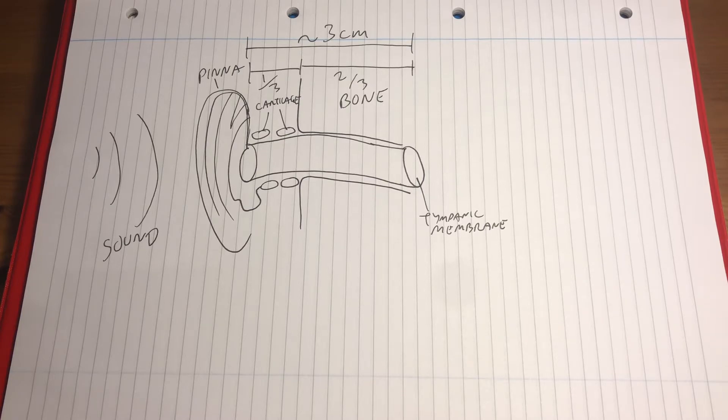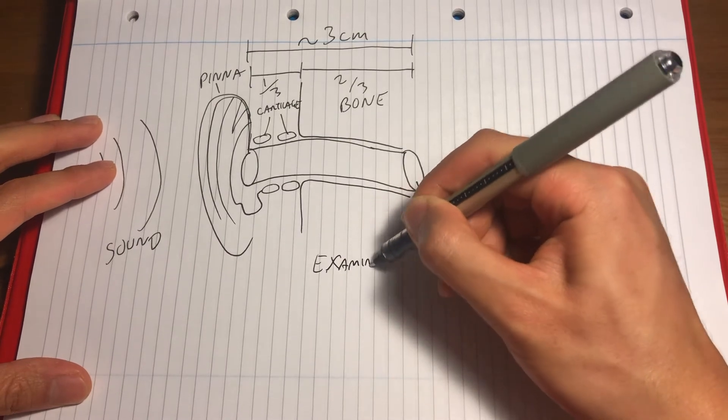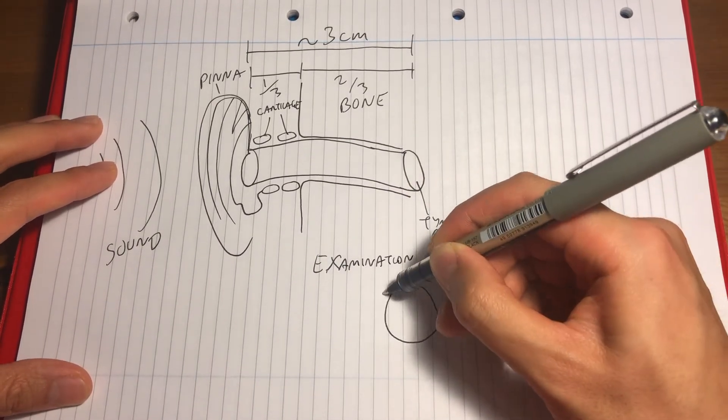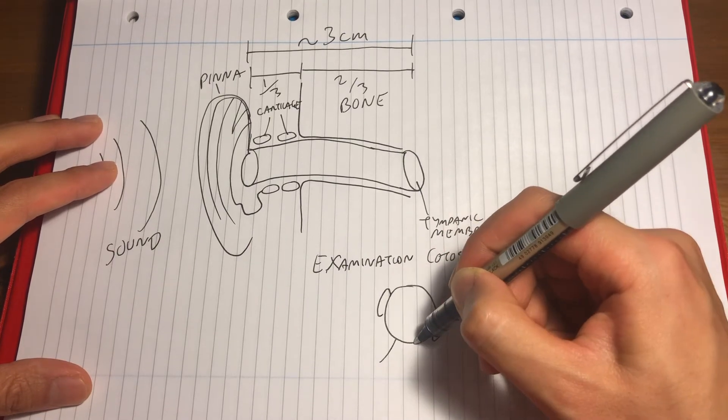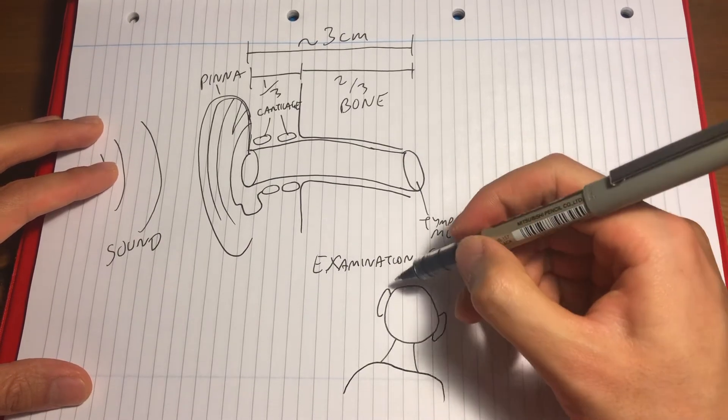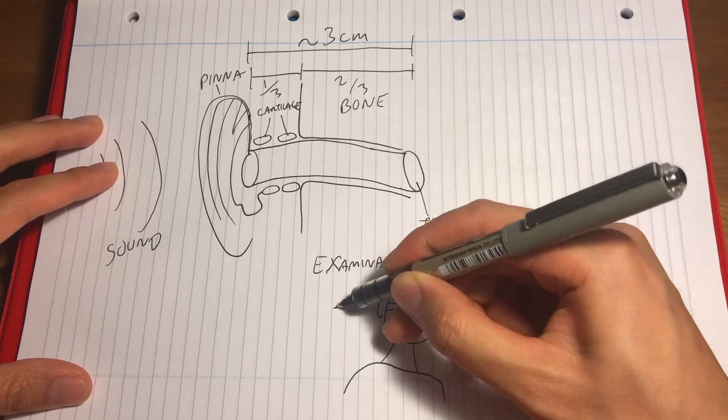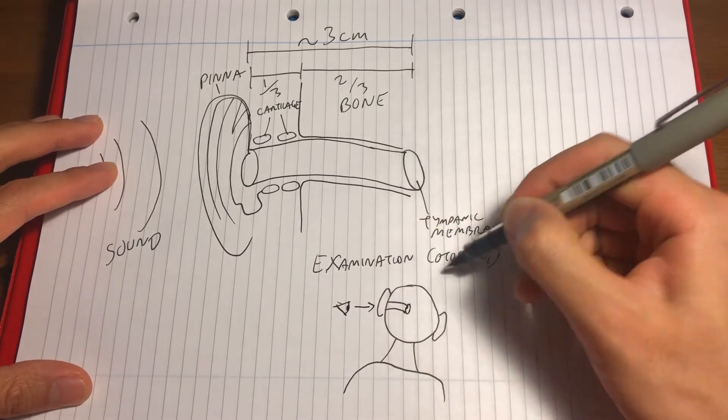For this reason, when examining the ear with an otoscope, you want the patient to be tilting their head away from you. And you can manipulate the pinna, usually in adults, in an upwards and backwards direction, to try and straighten the canal to give you a better view.